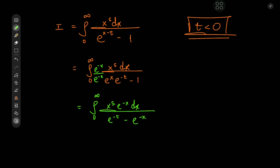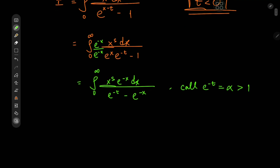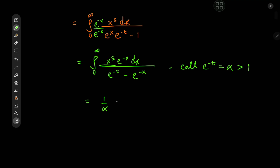We can factor out this e to the negative t term. We might as well call e to the negative t another name — let's call it the alpha parameter. Take note of the fact that t here is negative, so e to the negative t should be greater than 1, meaning the alpha parameter here is greater than 1. We'll now factor out this parameter and get 1 by alpha times the integral from zero to infinity of x to the s times e to the negative x divided by 1 minus e to the negative x by alpha, dx.